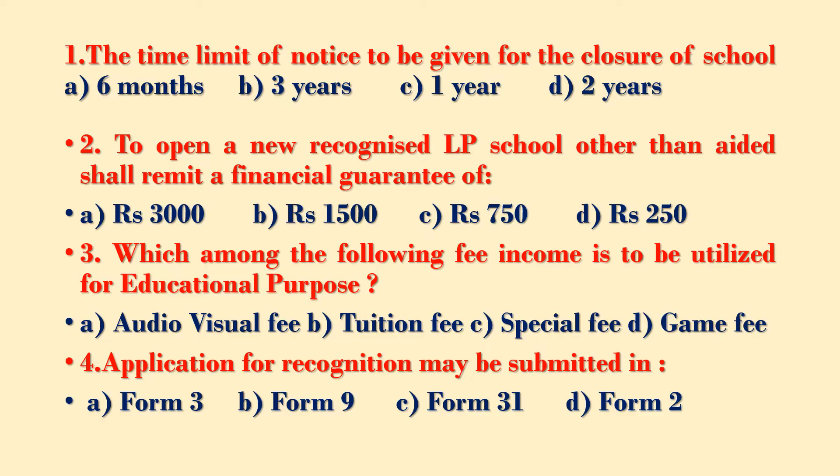Which among the following fee income is to be utilized for educational purpose? Option A – audiovisual fee, Option B – tuition fee, Option C – special fee, Option D – game fee. Application for recognition may be submitted in: Option A – Form 3, Option B – Form 9, Option C – Form 31, Option D – Form 2.